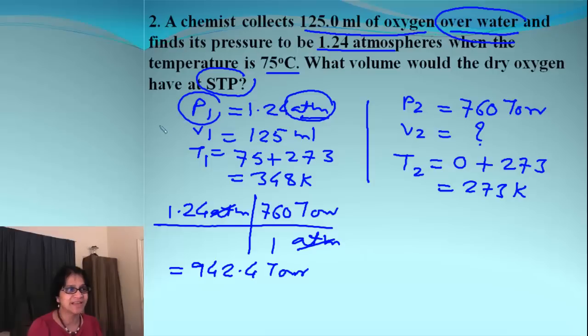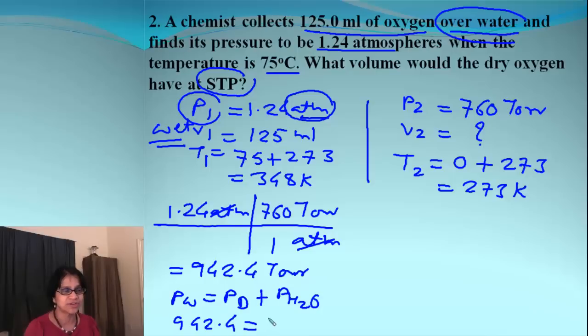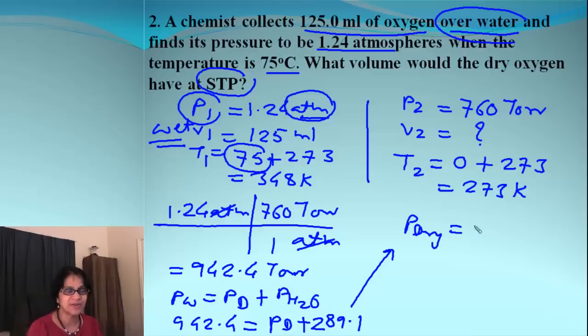Now remember, this is the pressure P1 for wet gas. It is the gas collected over water. That means we need to find out the pressure for the dry gas. P for wet gas will be equal to P for dry gas plus pressure for water. So we can say 942.4 is equal to pressure for the dry gas and the water vapor pressure at 75 degrees, which is 289.1. So when we solve for the pressure for the dry gas, we get that as 652.9 torr.